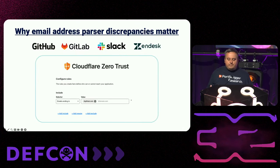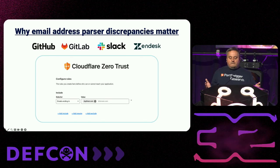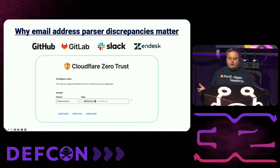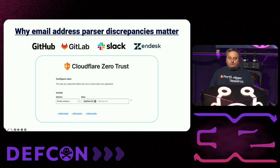This research started when we realized many websites use the domain part of the email address to infer the user's organization and apply access control. For example, Slack will automatically give you access to your company's Slack channel based upon your work email address. And Cloudflare Zero Trust can be configured to use the email domain to protect your internal network. This makes email verification a critical security boundary. What could possibly go wrong?